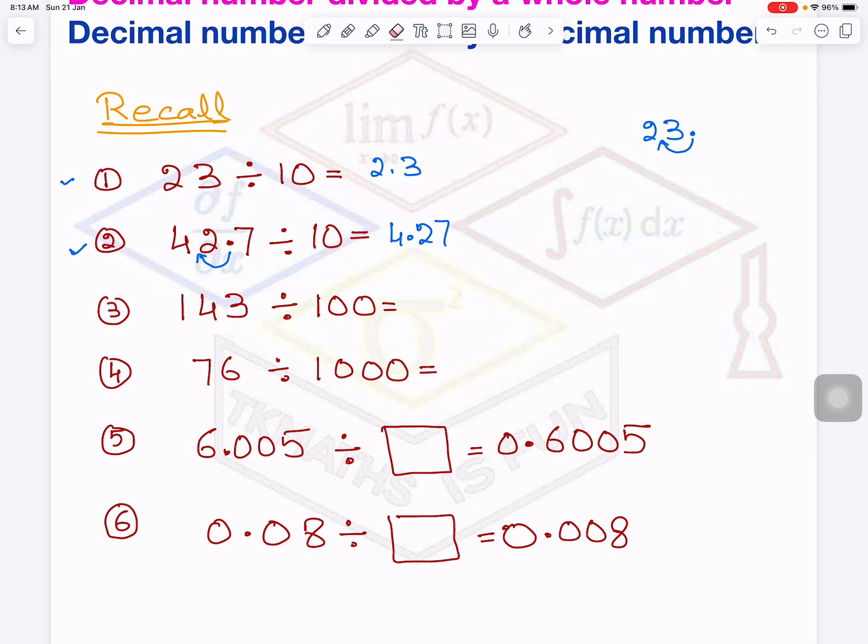Then 143 divided by 100. Again in 143, you cannot see decimal, but it is there. Where? Here at the end. So now when you are dividing by 100, where this decimal will jump? Two places to the left. One, two. So it will be 1.43.